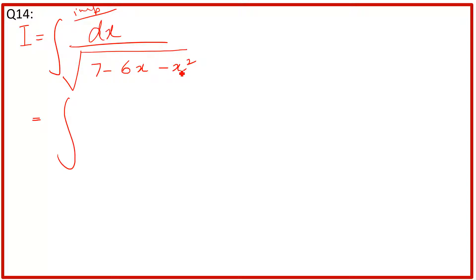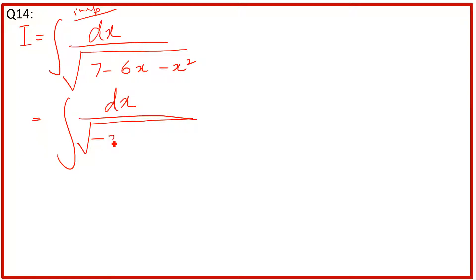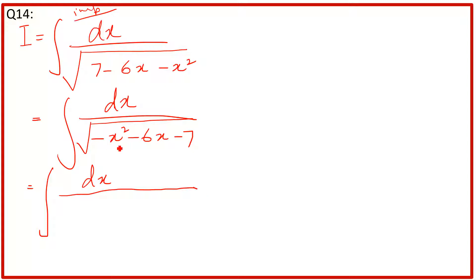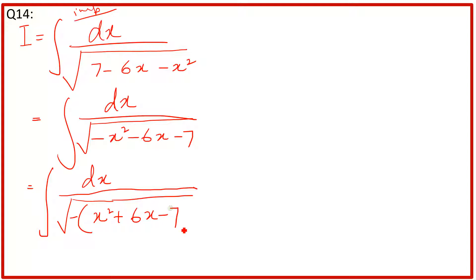So what will happen? Look, this is a quadratic expression — we have been given a polynomial. We have to arrange it with respect to degree: first write x square, then x, then the constant. So we arrange it in one step, which will be minus x square minus 6x minus 7. Now the integral of dx, we write a minus sign, so it becomes dx over minus (x square plus 6x minus 7).